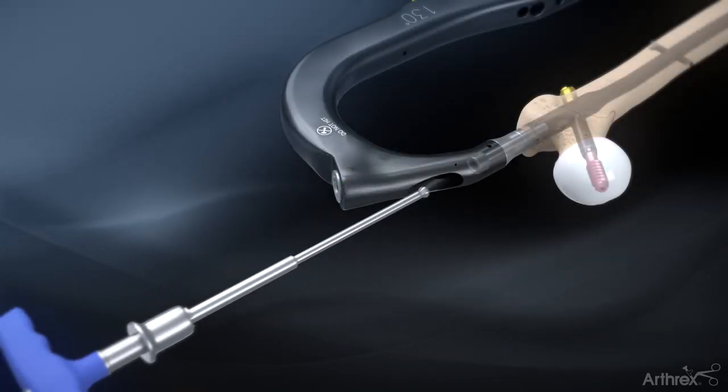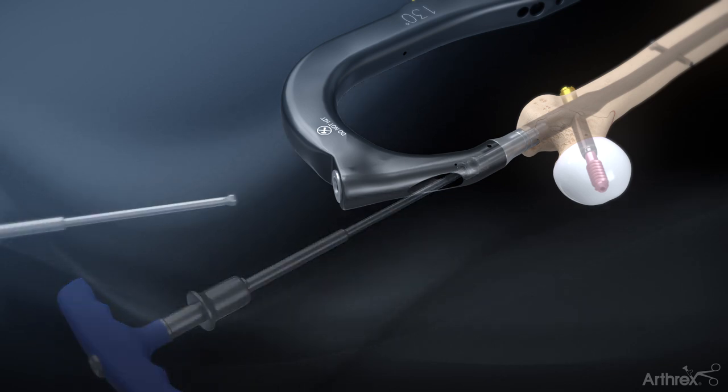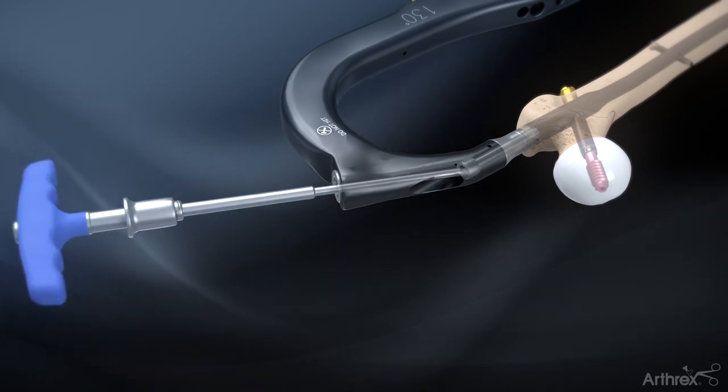To remove the targeting arm, unscrew the locking bolt from the jig through either the top hole or impactor pad attachment hole.